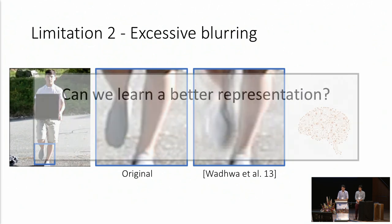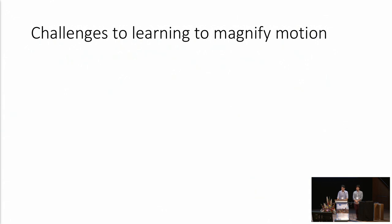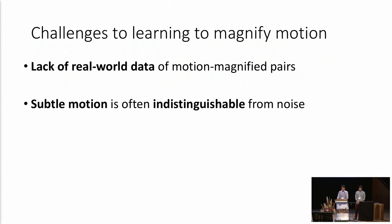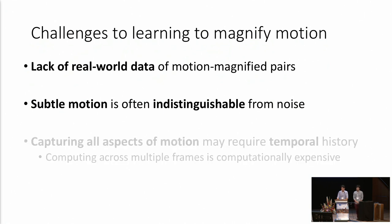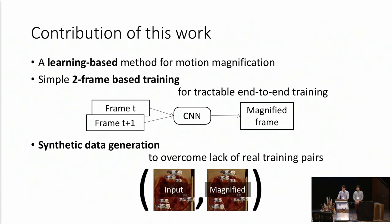These problems motivate us to develop a better representation for motion magnification in a learning-based way. Solving this problem with a learning-based approach has a number of challenges. First, we don't have real-world data for training because it doesn't exist in many cases and is very hard to obtain at large scale. Second, small motion can be easily corrupted by noise. Third, understanding the full aspect of motion requires long temporal history, which would be computationally complex.